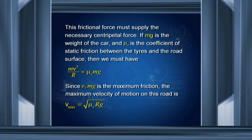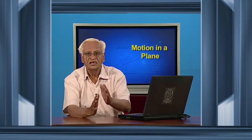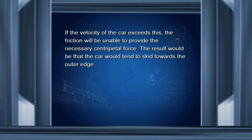This frictional force must supply the necessary centripetal force. The frictional force is μs·mg, and the centripetal force required is mV²/r. Equating the two, we get v_max equal to the square root of μs·r·g. This is the maximum speed because μs·mg is the maximum force of friction. If the velocity of the car exceeds this, friction will be unable to provide the necessary centripetal force and an accident can occur.